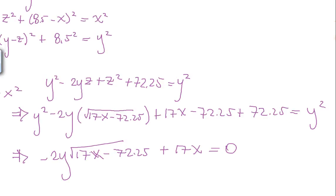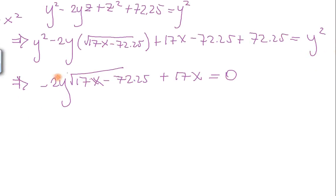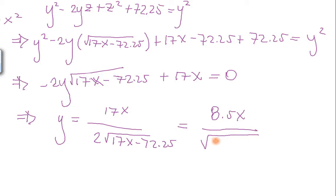So what does Y mean? Y is then, well, we divide this term by this one. So we have Y equal to 17X divided by 2 square root 17X minus 72.25, which is what? Well, 17 divided by 2, we go back to 8.5X divided by the square root 17X minus 72.25. So this is Y.